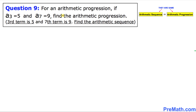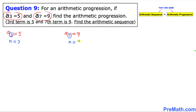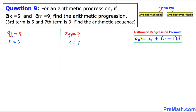Question 9 states: for an arithmetic progression, if a sub 3 equals 5 and a sub 7 equals 9, find the arithmetic progression — we have to create the arithmetic sequence given this data. a sub 3 means n equals 3, and a sub 7 means n equals 7. We'll be using the arithmetic progression formula.